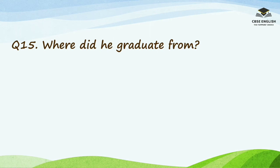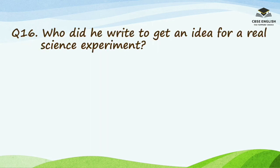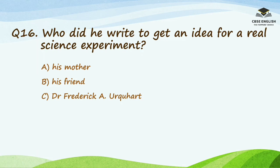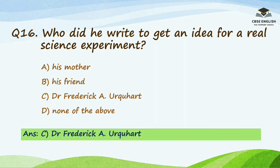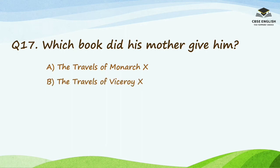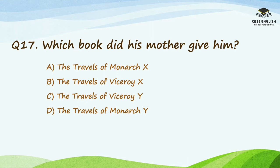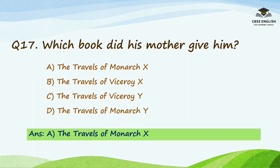Question number fifteen: where did he graduate from? Options are Oxford, Yale, Howard, or none of the above. The right answer is Howard. Question number sixteen: who did he write to get an idea for a real science experiment? Options are his mother, his friend, Dr. Frederick A. Urquhart, or none of the above. The right answer is Dr. Frederick A. Urquhart. Question number seventeen: which book did his mother give him? Options are 'The Travels of Monarch X,' 'The Travels of Viceroy X,' 'The Travels of Viceroy Y,' or 'The Travels of Monarch Y.' The right answer is 'The Travels of Monarch X.'